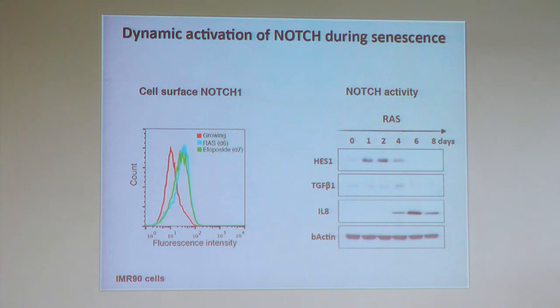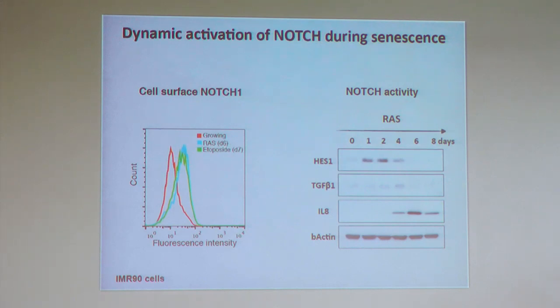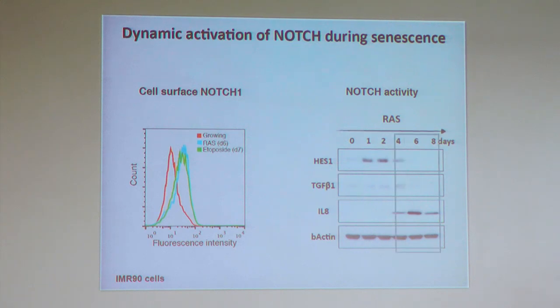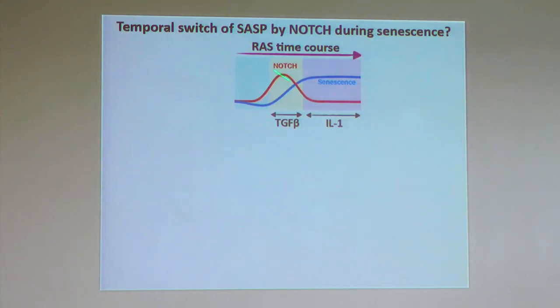Validation by flow cytometry shows that cell surface NOTCH1 is upregulated not just in oncogene-induced senescence but also in DNA damage-induced senescence — many different types of senescence show upregulation of cell surface NOTCH1. But looking at the time course in human diploid fibroblasts with inducible oncogenic RAS, NOTCH activity is only transient in the early stage of senescence and then disappears. This correlates with TGF-beta, one of the SASP components, and negatively correlates with the canonical pro-inflammatory cytokine SASP component IL-6 and IL-8. So there seem to be two phases of SASP: a TGF-beta phase and a pro-inflammatory cytokine phase, correlating nicely with NOTCH activity.